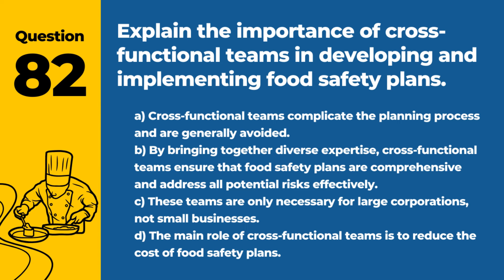Question 82. Explain the importance of cross-functional teams in developing and implementing food safety plans. a. Cross-functional teams complicate the planning process and are generally avoided. b. By bringing together diverse expertise, cross-functional teams ensure that food safety plans are comprehensive and address all potential risks effectively. c. These teams are only necessary for large corporations, not small businesses. d. The main role of cross-functional teams is to reduce the cost of food safety plans. Answer: b. By bringing together diverse expertise, cross-functional teams ensure that food safety plans are comprehensive and address all potential risks effectively. Collaboration across departments enhances the effectiveness of food safety initiatives.